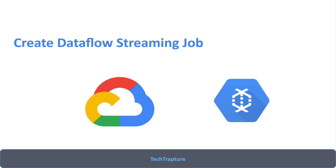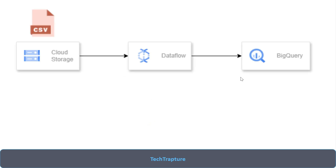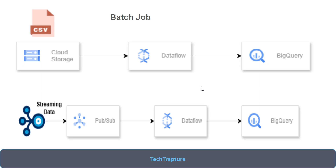Let's first try to understand what a Streaming Job is. In our last video we created a Dataflow pipeline to load a CSV file from a cloud storage bucket into BigQuery. That file had a thousand records and all those records were loaded in one go as a batch into BigQuery — that was our batch job. Now we will receive data in a streaming format, in real time one record at a time. As soon as we receive a record in PubSub we immediately load it into BigQuery, rather than loading all thousand records in a batch. That is the difference between a batch job and a streaming job.